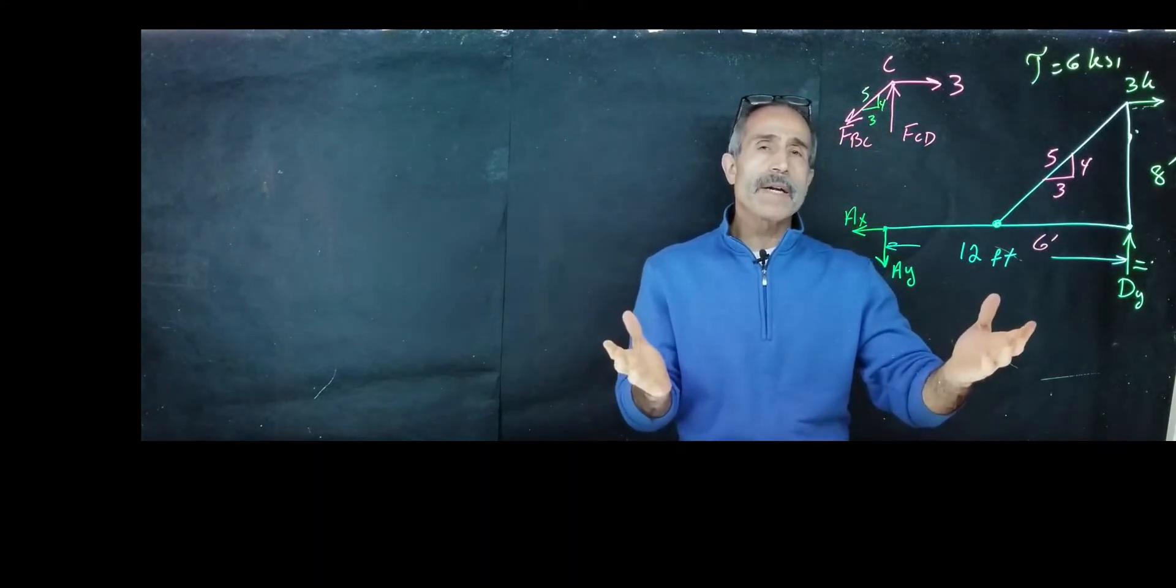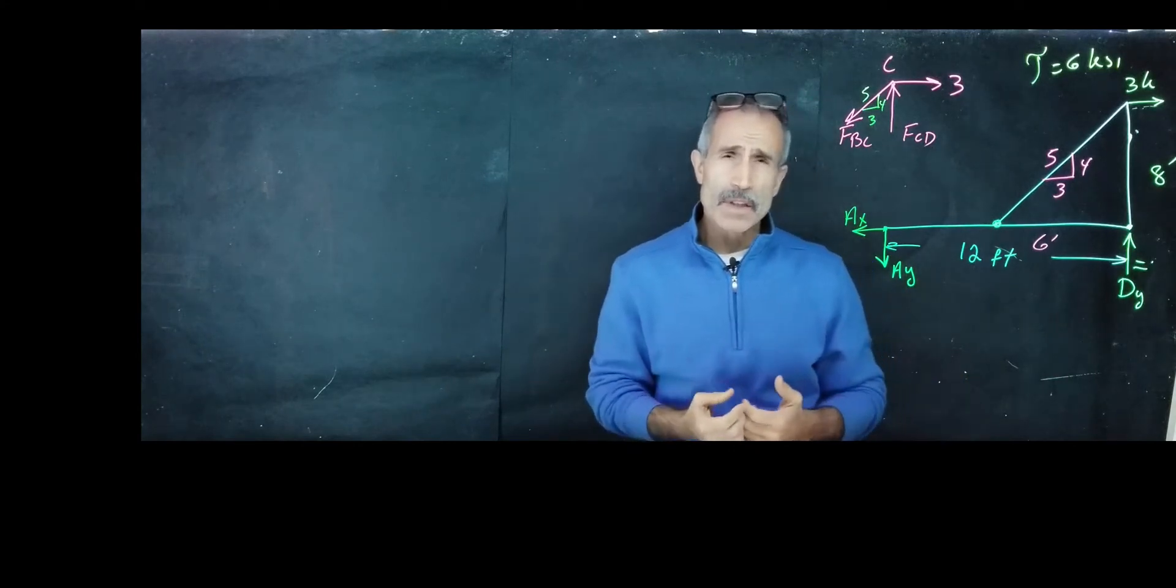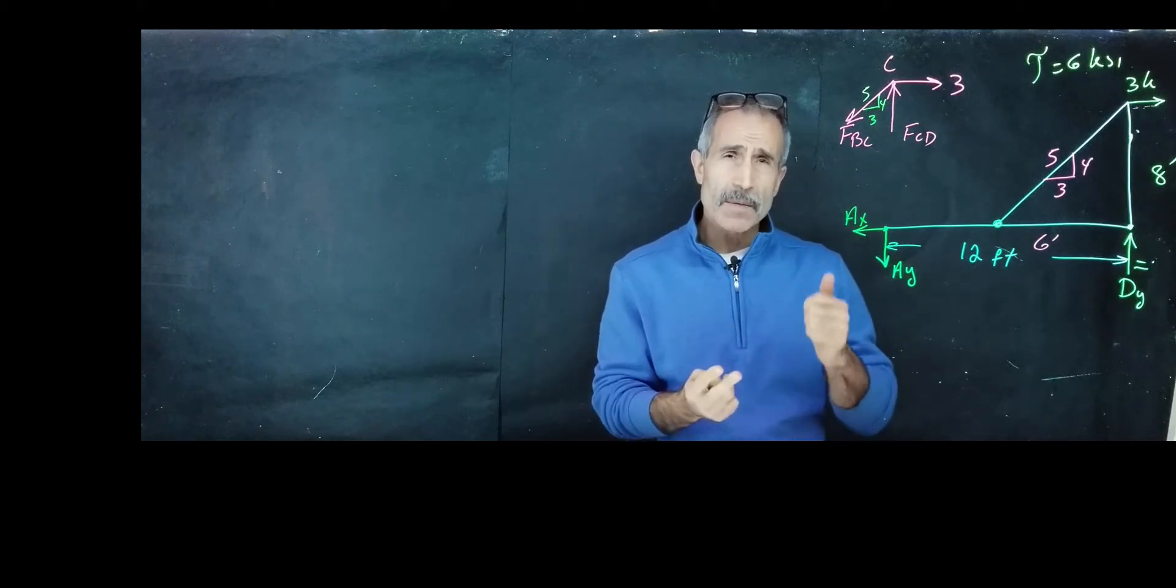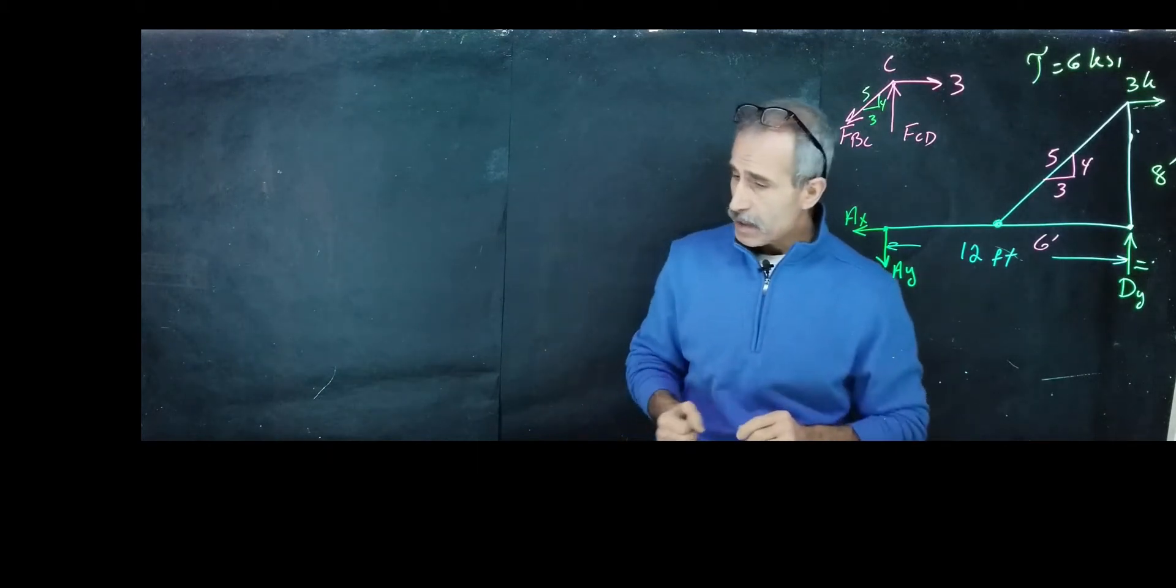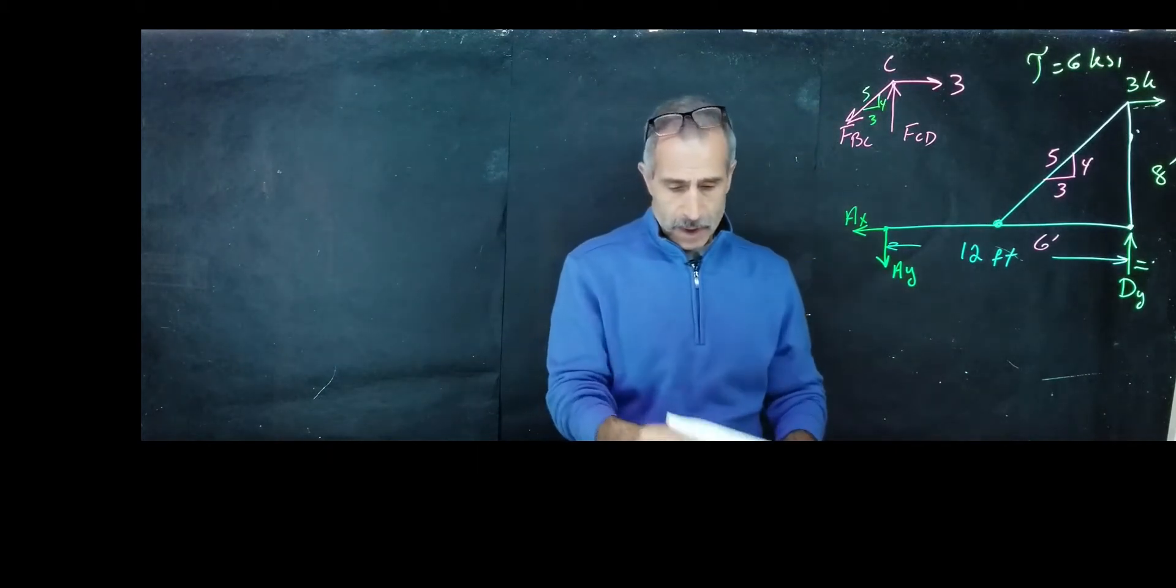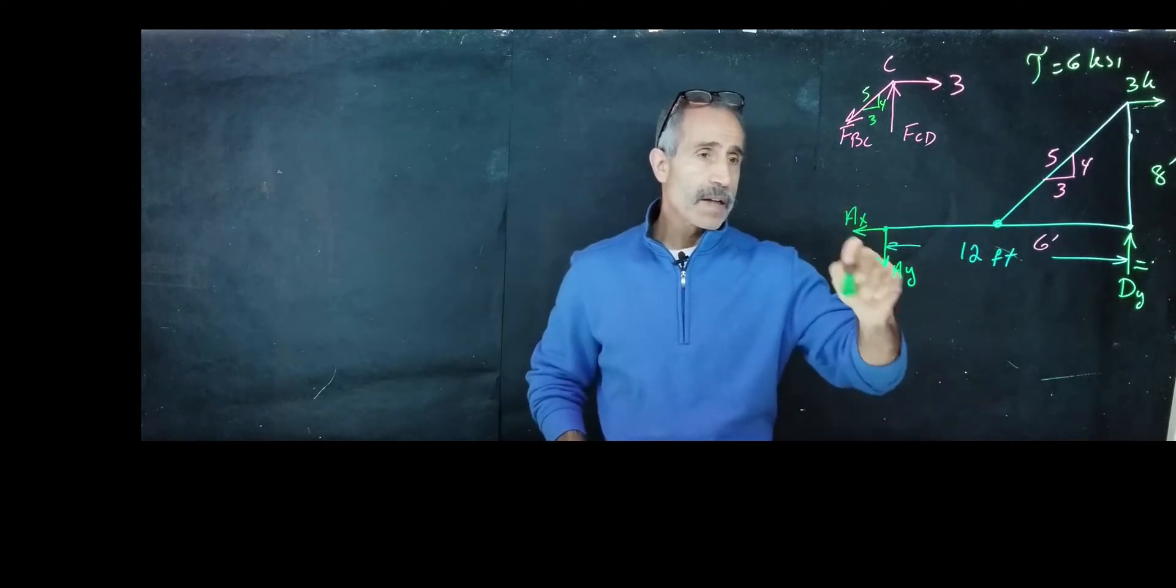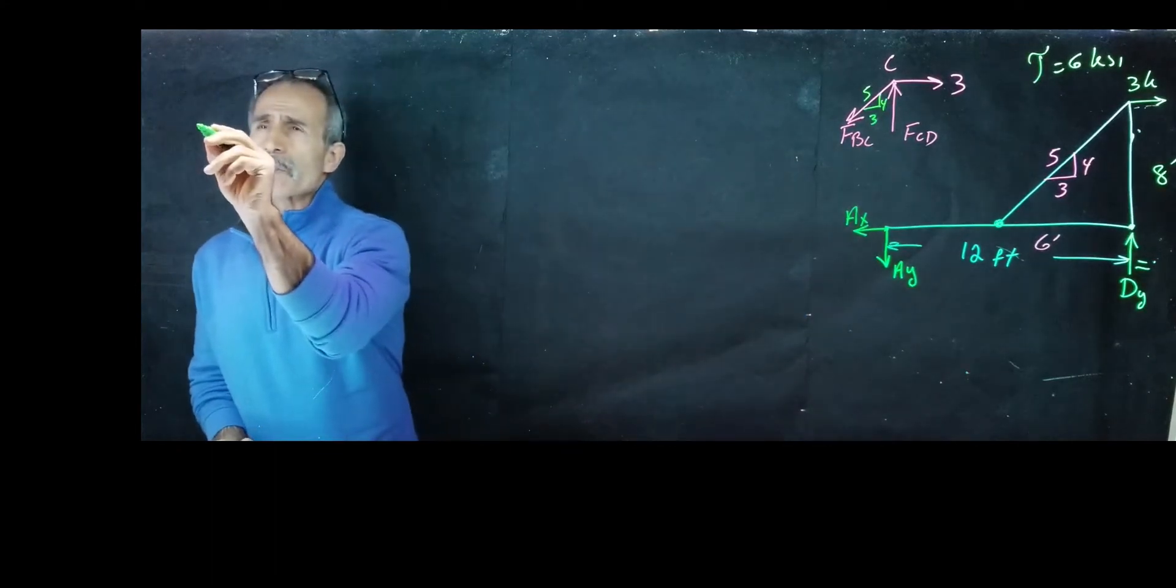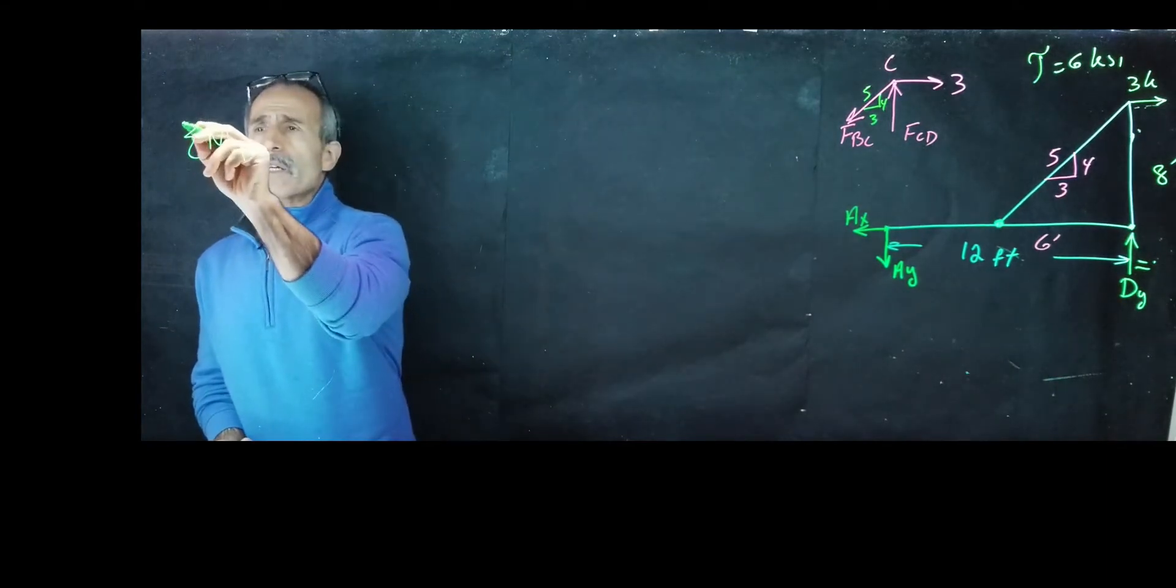When we have a free body diagram, we can easily solve the problem. How we do that is we're going to use the equilibrium equation, and there's three of them: summation Fx, summation Fy, and summation of moment. And here, let's go ahead and solve this by summation of moment. Let's take a moment about point D, that way I can calculate my reaction at Ay. So summation moment about point D, counterclockwise is positive equals zero.